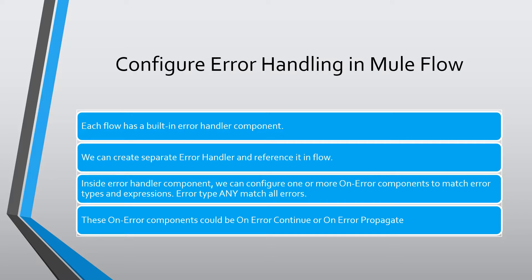We can use these On Error components inside an error handler. Mule has a built-in error handler, or we can create a separate error handler and reference it in the flow. Inside the error handler, we need to configure On Error components to match specific error types or to match an expression.